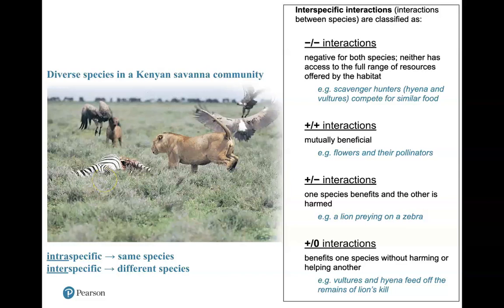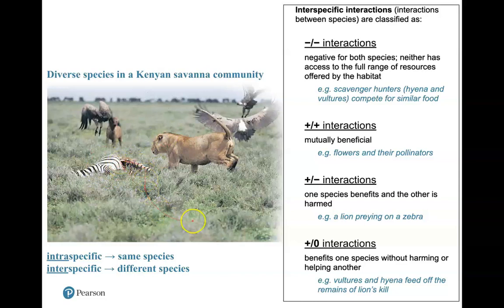An example of a positive-null interaction are these scavenger animals waiting to eat the leftovers of the zebra from the lion. When the lion is done, they can have the leftovers. The lion is neither benefiting from that interaction nor is harmed — the lion has taken its kill and its energy needs from the zebra and walks away. These scavenger animals benefit very much from that interaction, having their energy needs met.